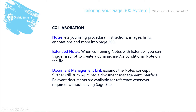Moving on to collaboration and which modules to consider when tailoring the collaboration component of Sage 300. Notes lets you bring procedural instructions, images, links, annotations, and more into Sage 300 in a context-sensitive fashion. Extended notes allows you to combine Notes and Extender, triggering a script to create a dynamic and/or conditional note on the fly. And Document Management Link expands the notes concept further into a document management interface, with relevant documents available for reference whenever required without needing to leave Sage 300.